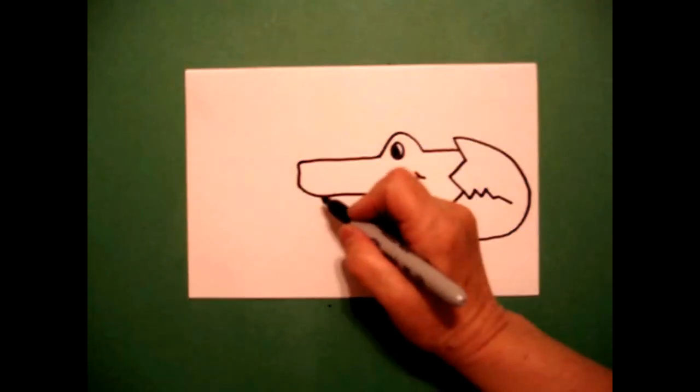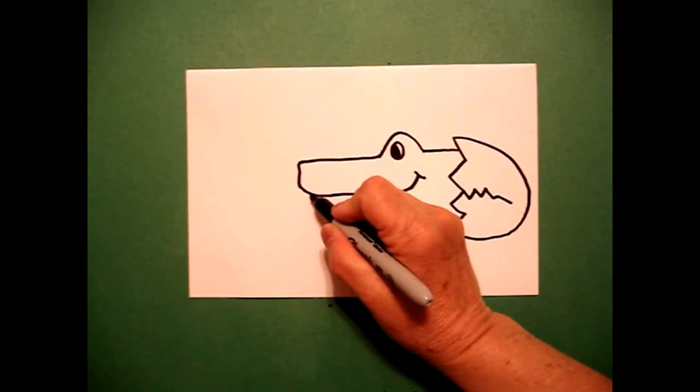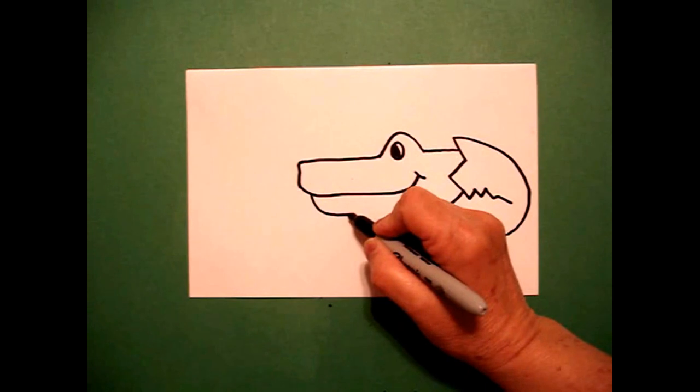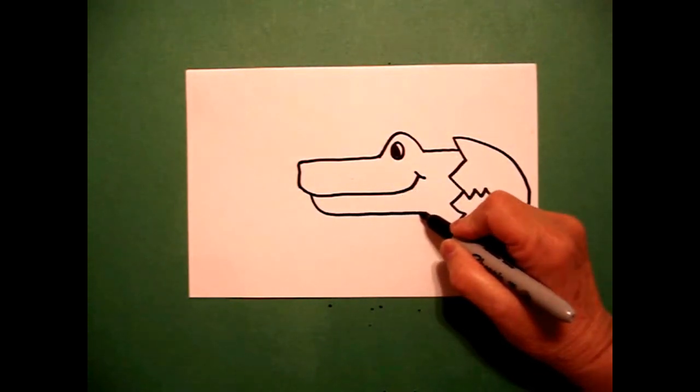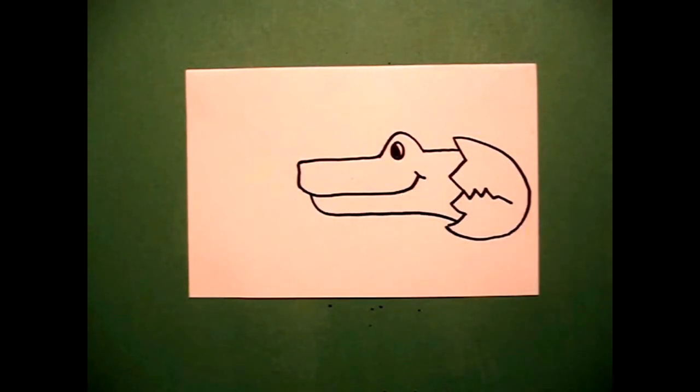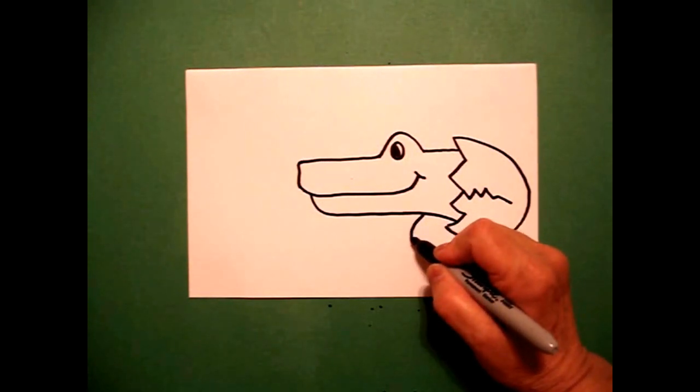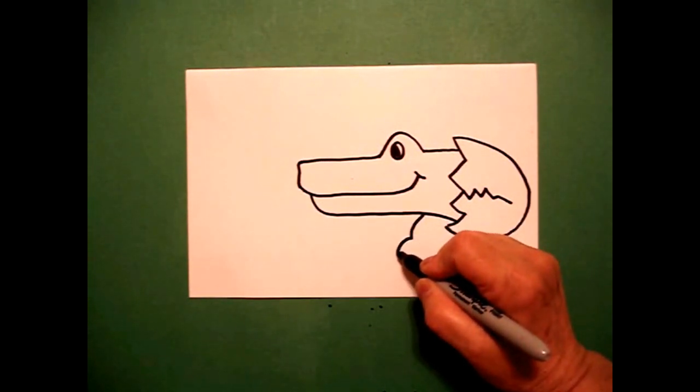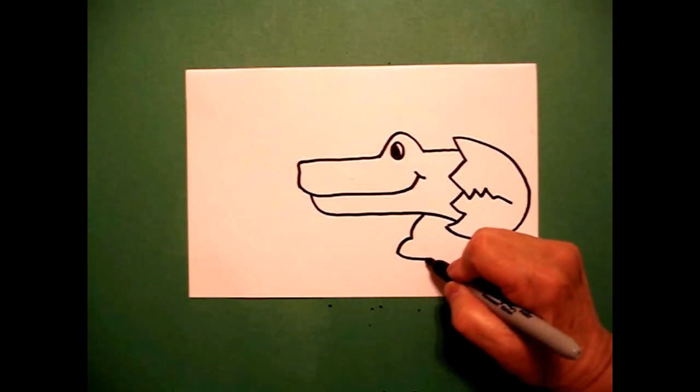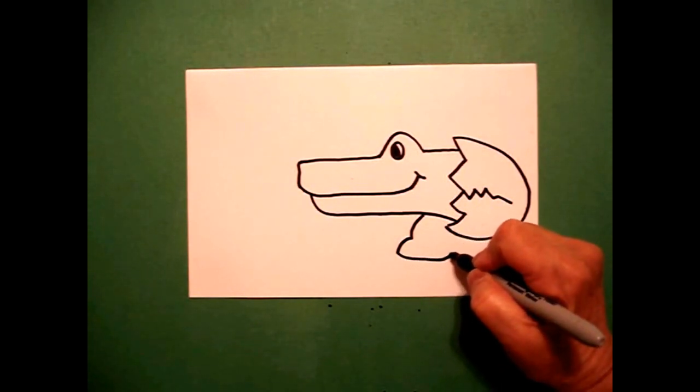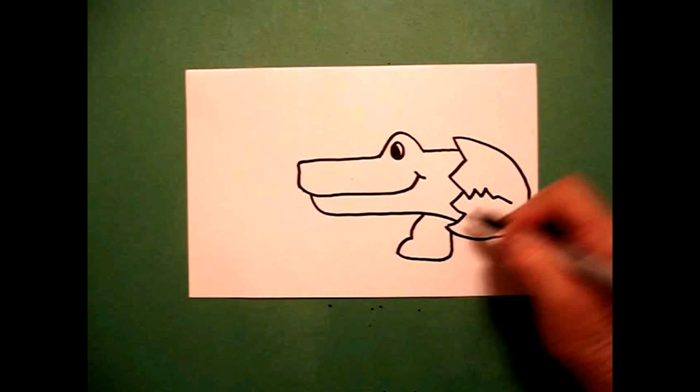I come back over to the left and draw a curve line all the way down, over, connect. Right about here, I'm going to draw a curve line down, little curve line, slightly curve line, straight line up, connect.